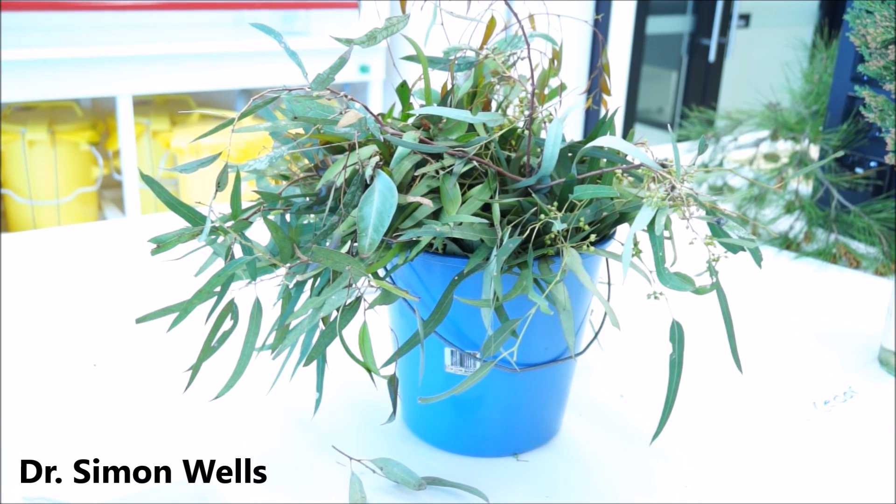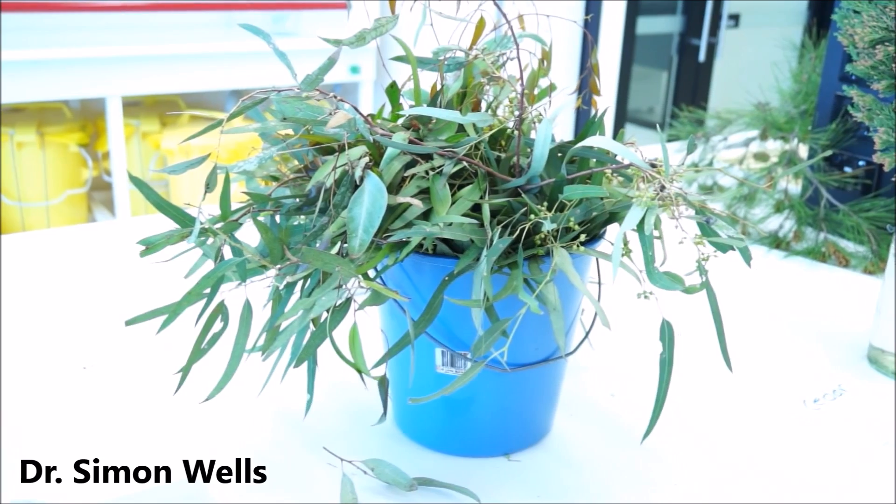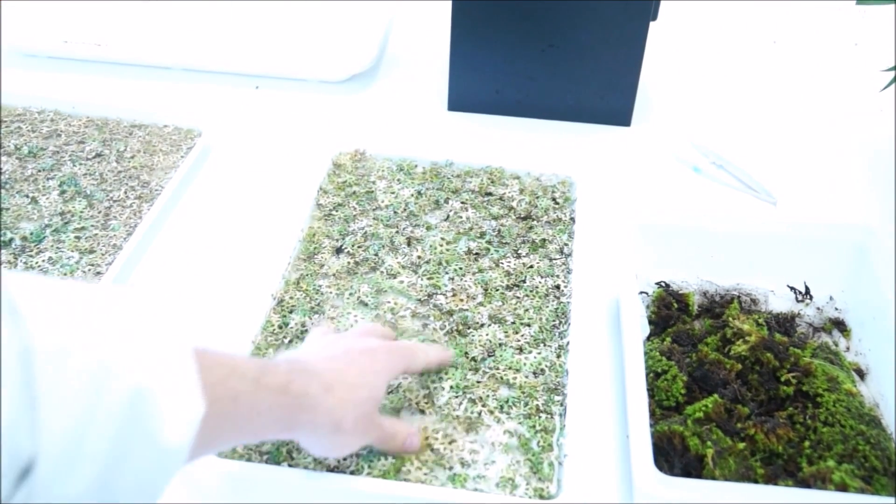PRAC 3 will examine water loss in three different species. One of them is the eucalypt, another one is moss right here, and another one you've met in PRAC 2 is lichen.